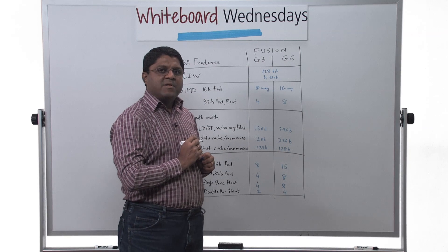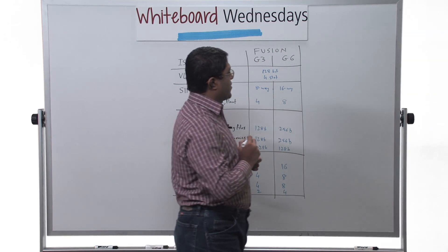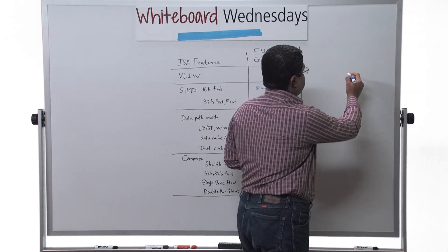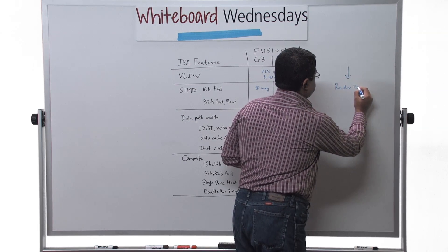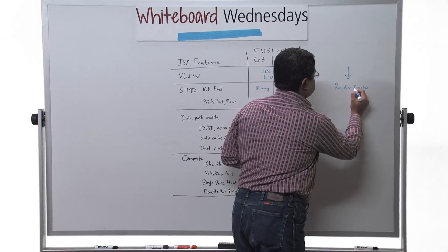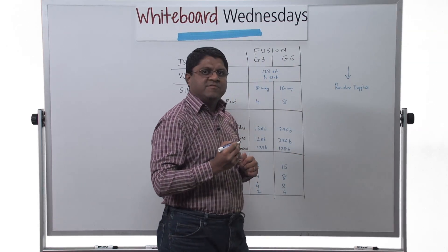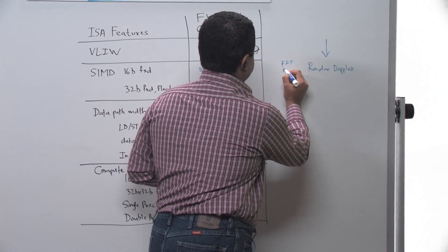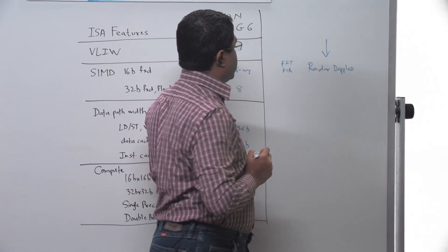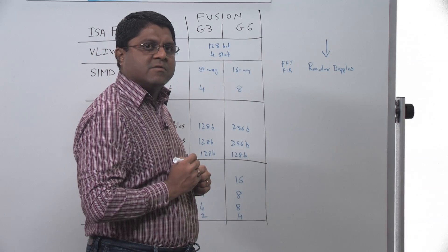As an example, let's take a look at radar signal processing and a signal processing pipeline for radar looks something like this. There is a range Doppler processing which does FFTs and FIRs. Both the Fusion G3 and G6 have efficient instruction set for doing FFT and FIR kernels.